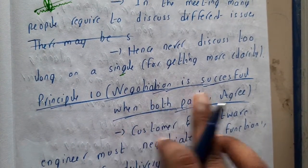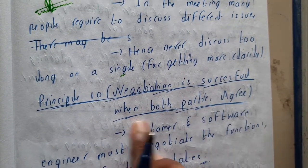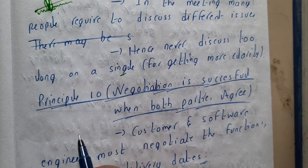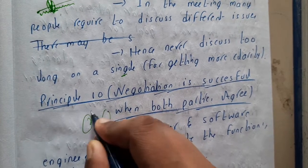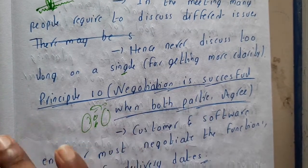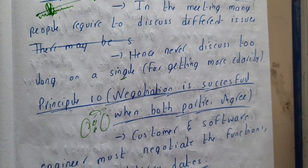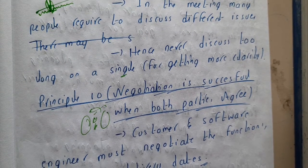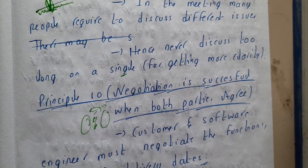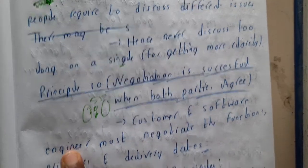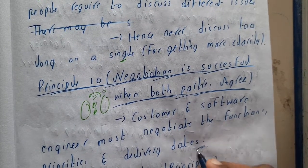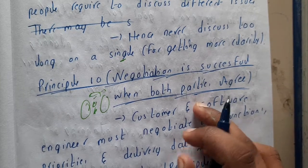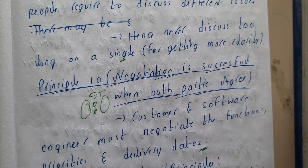The tenth principle is that negotiation is successful when both parties agree. Customers and software engineers must negotiate on functions, priorities, and delivery dates. Everything desired — budget, delivery date, priorities — should be clearly discussed and agreed upon during the requirements gathering phase.